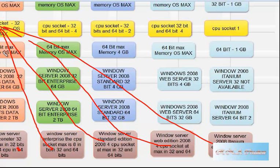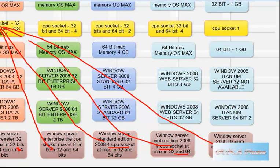So when it says OS Max, it means you refer to the operating system — in this case Windows Server 2008. For Datacenter it is 32 CPU sockets for 32-bit and 64 CPU sockets for 64-bit. For Windows Enterprise it is 8 CPU, and for Standard it is 4 CPU sockets. For Itanium, it is 64 CPU sockets, which is only available in 64-bit.